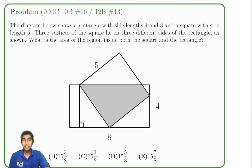Let's explore this cool geometry problem from the 2022 AMC 10 and 12b. The diagram below shows a rectangle with side lengths 4 and 8, and a square with side length 5. Three of the vertices of the square lie on three different sides of the rectangle, as shown. What is the area of the region inside both the square and the rectangle?